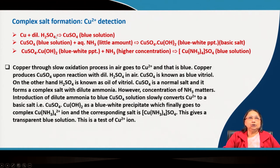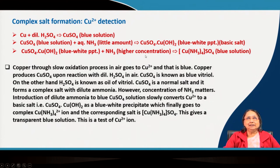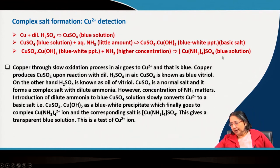So, when you increase the ammonia concentration, the precipitate goes into solution and forms the copper amine complex. This gives a transparent blue solution, and this is a test for the Cu²⁺ ion. The reaction sequence is: copper with dilute H₂SO₄ gives blue copper sulfate solution; copper sulfate with aqueous ammonia gives the blue-white basic salt precipitate; and higher ammonia concentration produces the complex salt. This is a very good test for the copper ion.